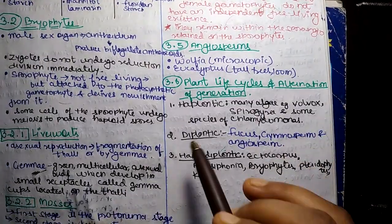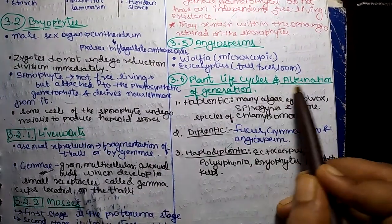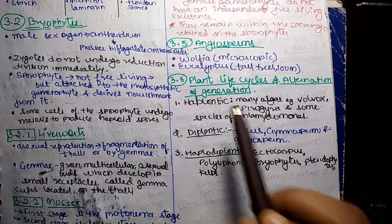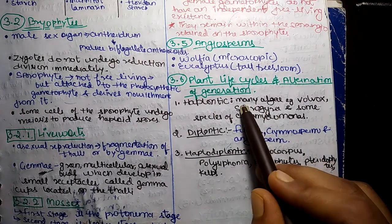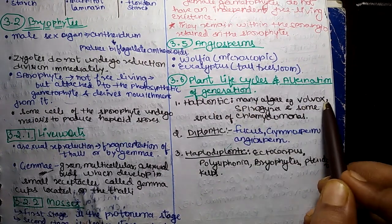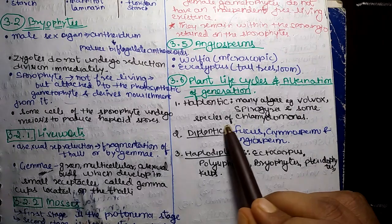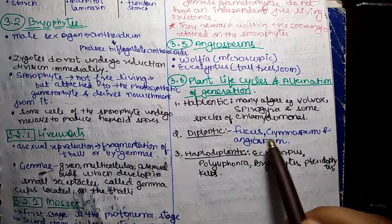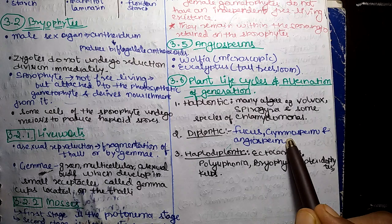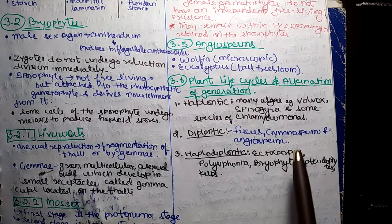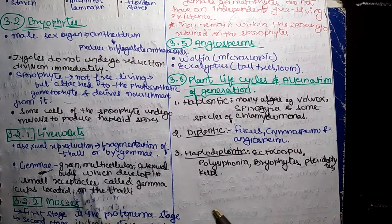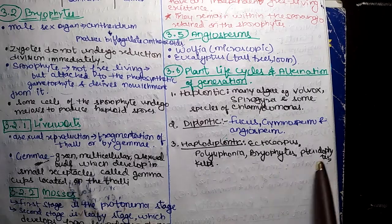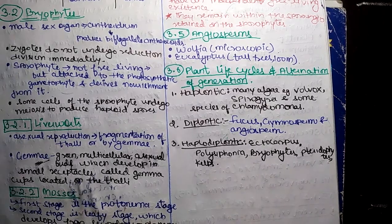The last subtopic is plant life cycle and alternation of generation. This is the haplontic life cycle — many algae are examples, such as Volvox, Spirogyra, and some species of Chlamydomonas. Diplontic life cycle is found in Fucus, Gymnosperms, and Angiosperms. Haplodiplontic life cycle is found in Ectocarpus, Polysiphonia, Bryophytes, Pteridophytes, and Kelps.